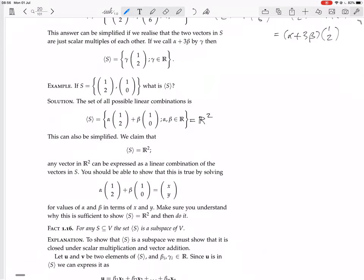Now, it says any vector in R² can be expressed as a linear combination of the vectors in S. So of (1,2) and (1,0). You should be able to show this is true by solving this equation. Alpha times (1,2) plus beta times (1,0) equals (x,y). And where x, y can be anything. So that (x,y) is any vector in R². So we do this by solving for the values of alpha and beta in terms of x and y.